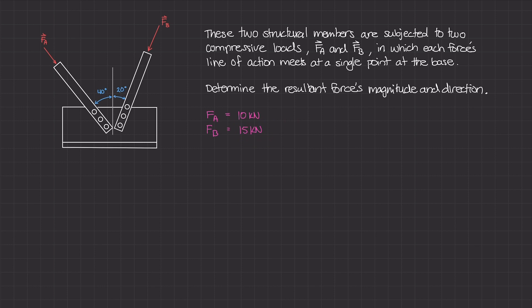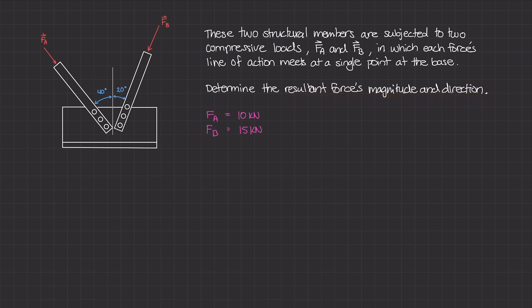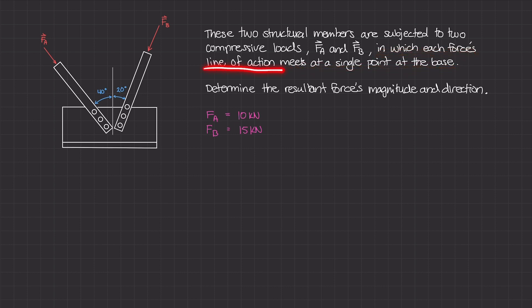F-A makes an angle of 40 degrees from the vertical line, and this element makes an angle of 20 degrees. The question asks us to determine the resultant force's magnitude and direction. There is one very important detail in the problem statement: each force's line of action meets at a single point at the base.